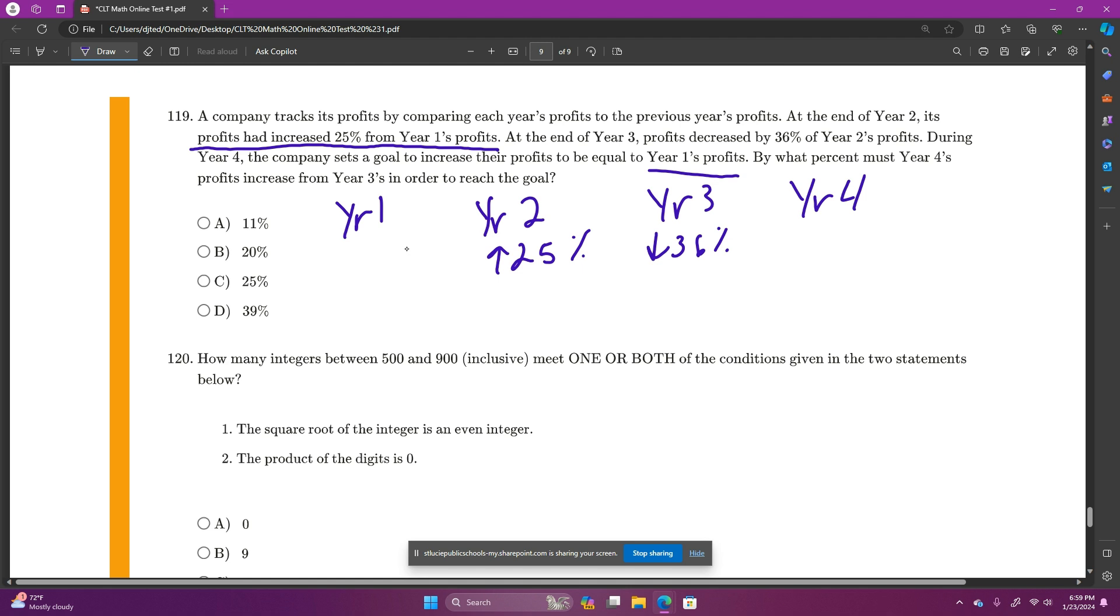By what percent must year four's profits increase from year three's in order to reach the goal? So if year one, let's work with some easy numbers and say they started making $100, and they went up 25%, then that would be times 1.25. So they made $125 the next year.